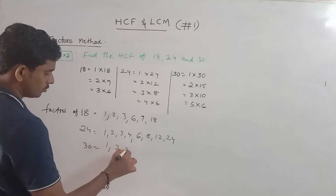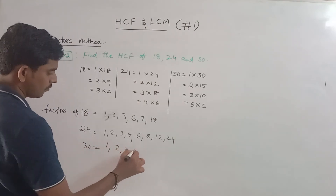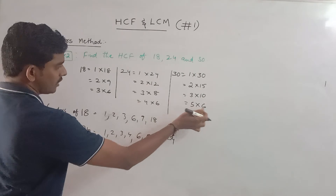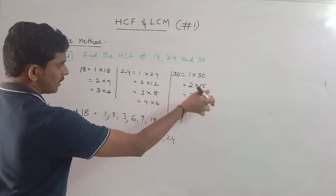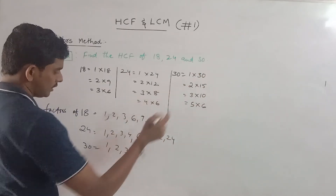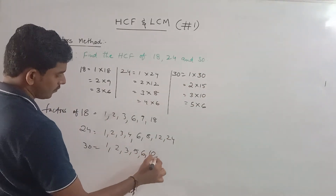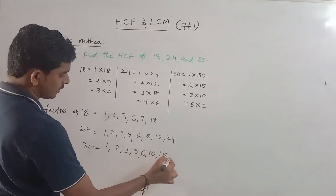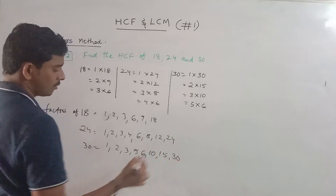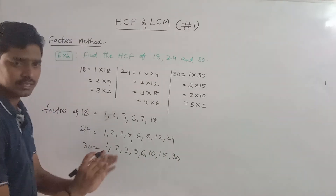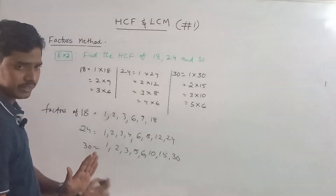So the factors of 30 are 1, 2, 3, 5, 6, 10, 15, and 30. Step 1 — listing all factors — is now completed.